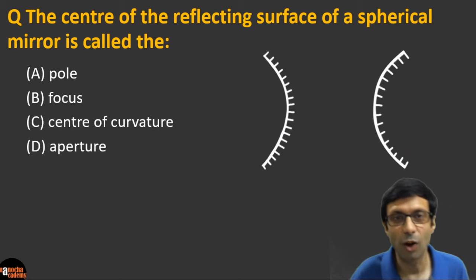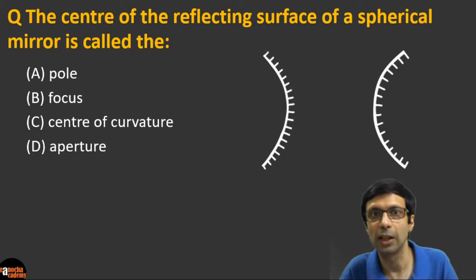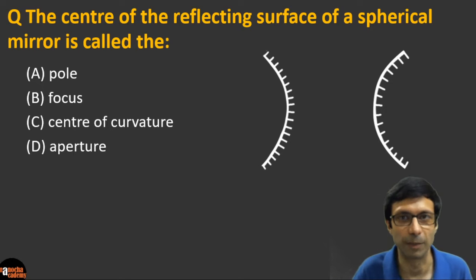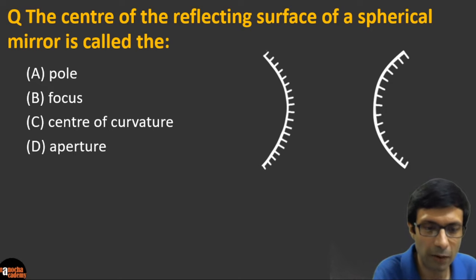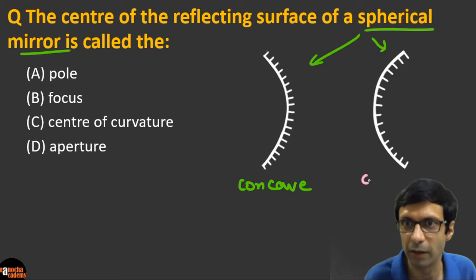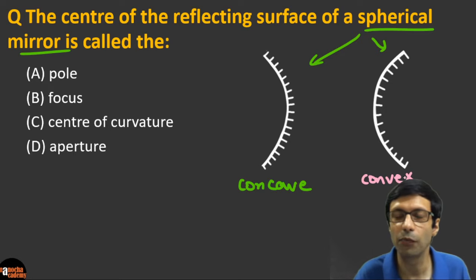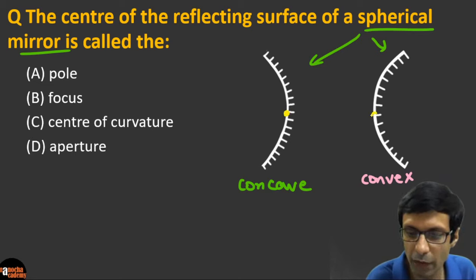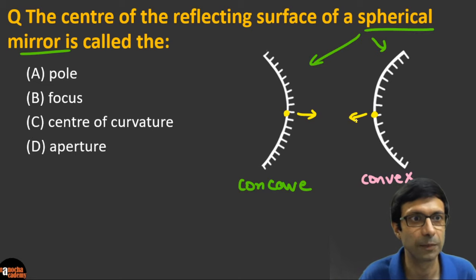Next question: the center of the reflecting surface of a spherical mirror is called — (a) the pole, (b) the focus, (c) center of curvature, or (d) aperture? There are two types of spherical mirrors — concave and convex — and we're asking about the center of the reflecting surface of either one.